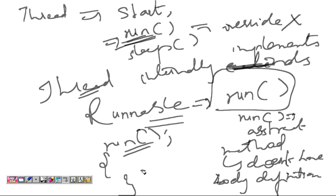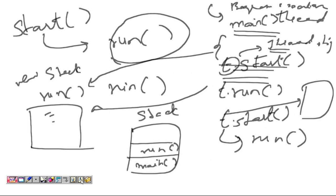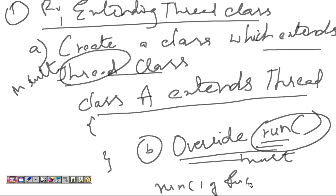If you don't override run, it calls the run method of the Runnable interface which has no implementation — it's just an empty abstract method. So overriding the run method is a must; otherwise it will have no logic.